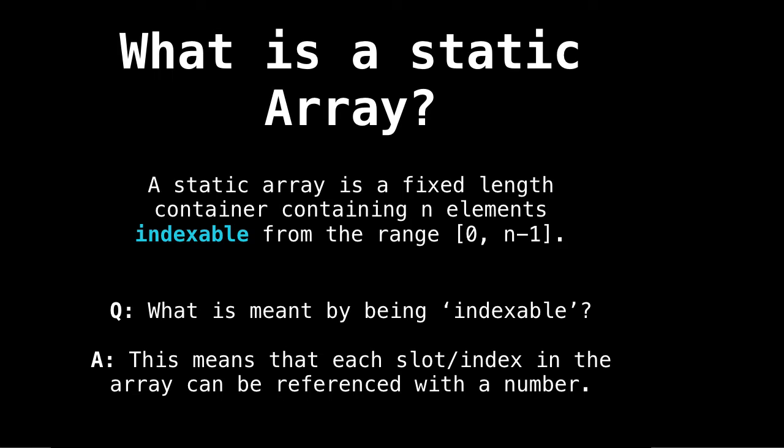Discussion and examples. So what is a static array? A static array is a fixed length container containing n elements, which are indexable, usually on the range of zero inclusive to n minus one also inclusive.